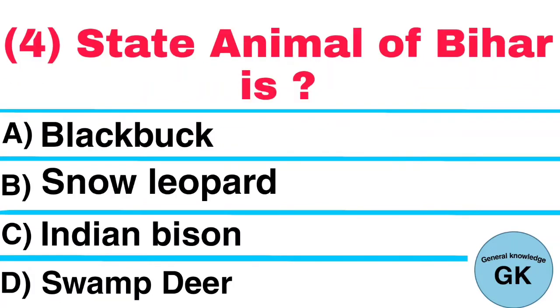Question Number 4. State Animal of Bihar is: A. Black Buck, B. Snow Leopard, C. Indian Bison, D. Swamp Deer. Answer: Indian Bison.